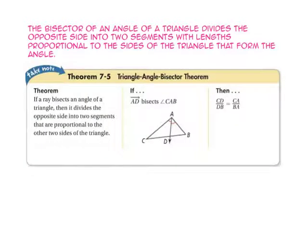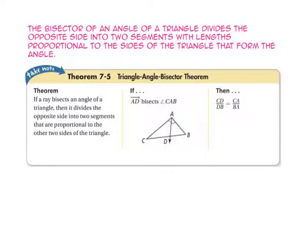The bisector of an angle of a triangle divides the opposite side into two segments with lengths proportional to the sides of the triangle that form the angle. Let's take a look at theorem 7-5, the triangle angle bisector theorem: if a ray bisects an angle of a triangle, then it divides the opposite side into two segments that are proportional to the other two sides.